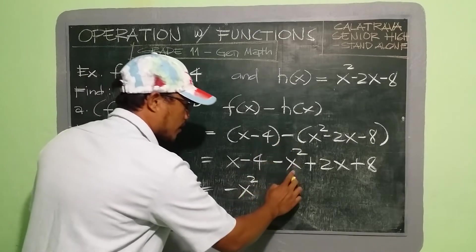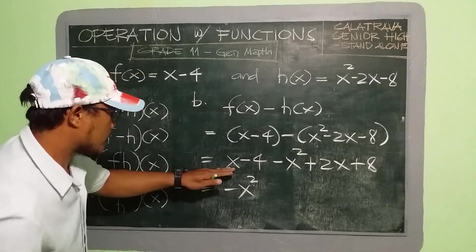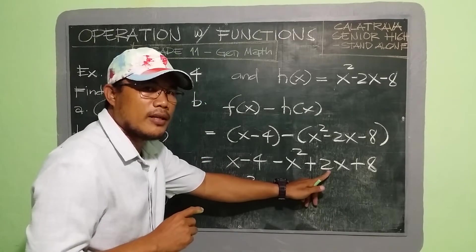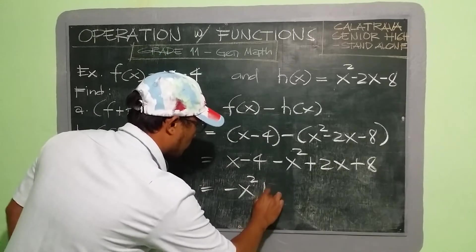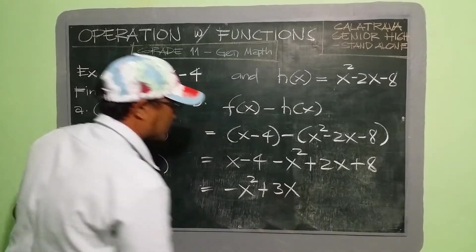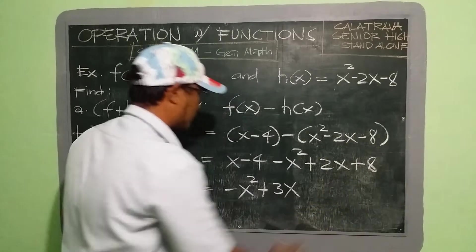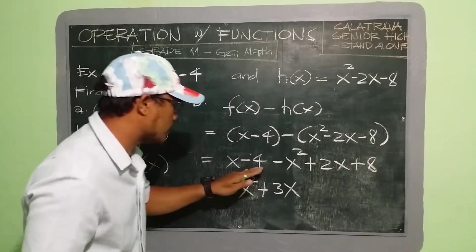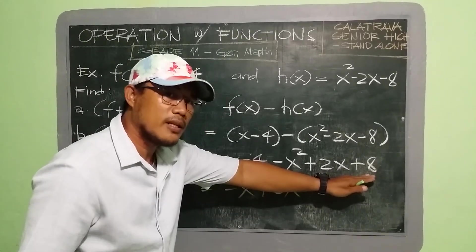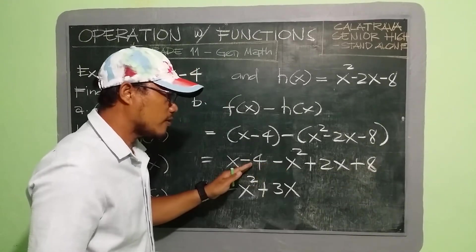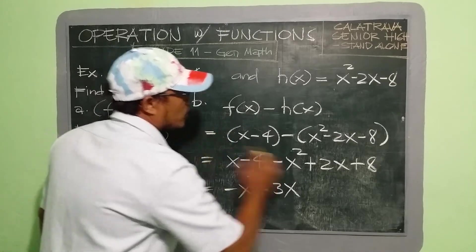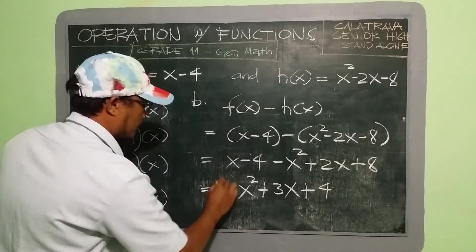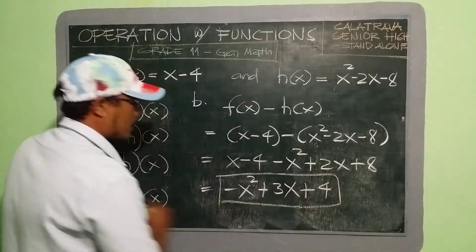We bring down −x² since there's only one x² term. For x terms: 1x + 2x = 3x. For constants: −4 and +8 have different signs; taking the difference gives 4, and since positive 8 is bigger, the answer is positive 4. Our final answer is −x² + 3x + 4.